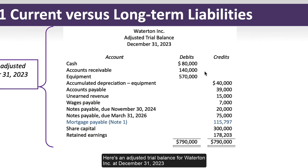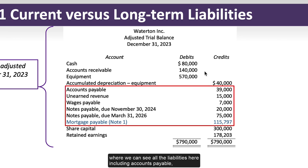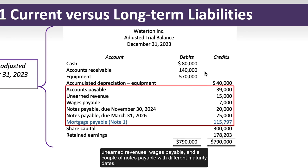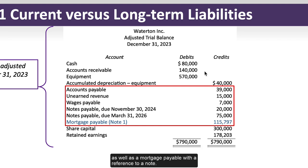Here's an adjusted trial balance for Waterton Inc. at December 31, 2023, where we can see all the liabilities including accounts payable, unearned revenues, wages payable, a couple of notes payable with different maturity dates, as well as a mortgage payable with a reference to a note.